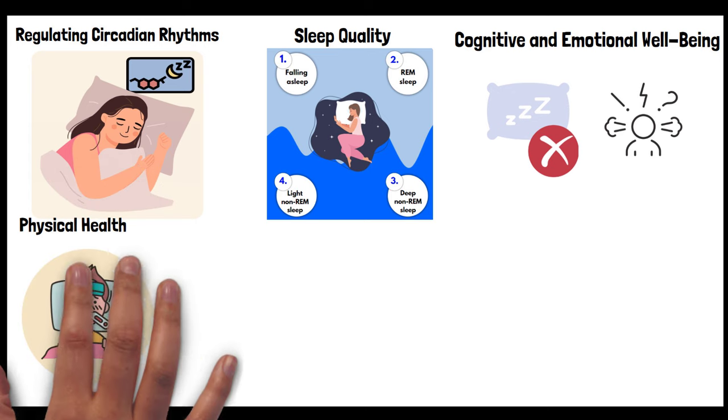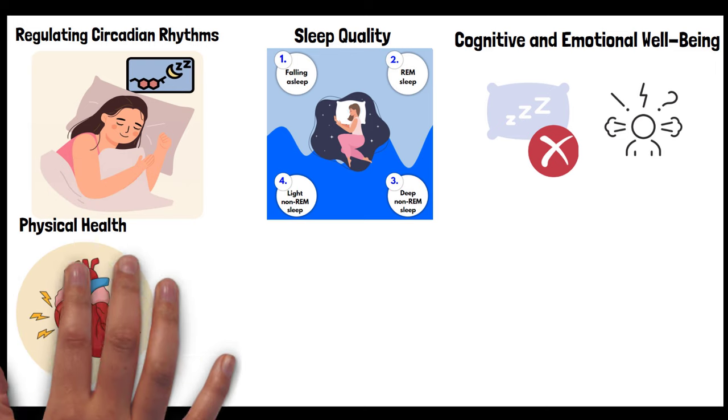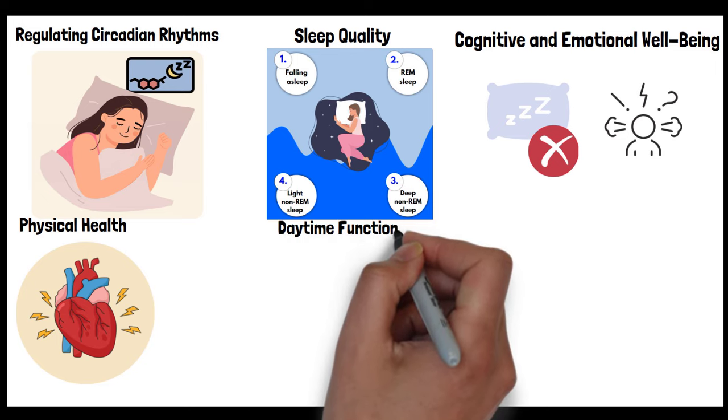Physical health: inconsistent sleep patterns can compromise the immune system, making you more susceptible to illnesses. Irregular sleep patterns have been linked to metabolic issues, including increased risk of obesity and diabetes. Regular sleep patterns contribute to cardiovascular health and can reduce the risk of heart-related issues like hypertension.